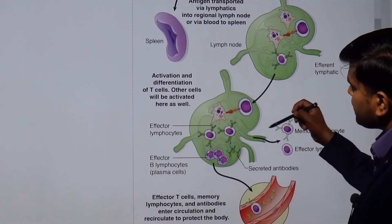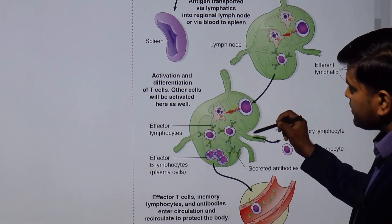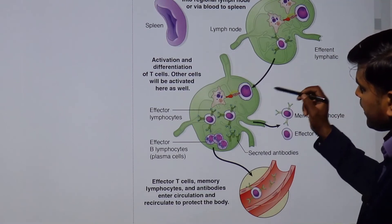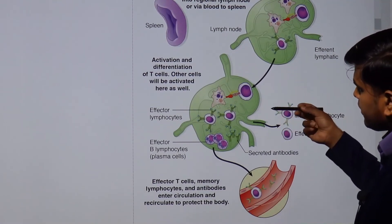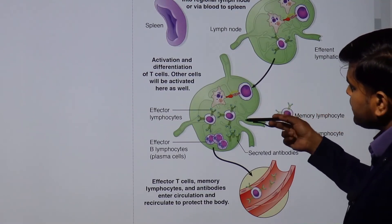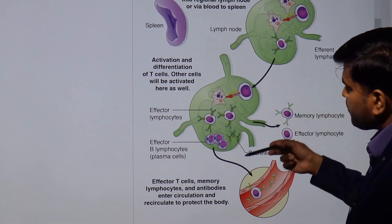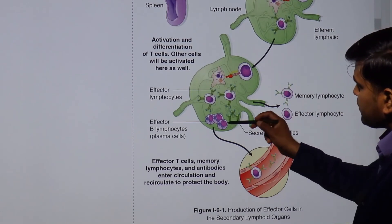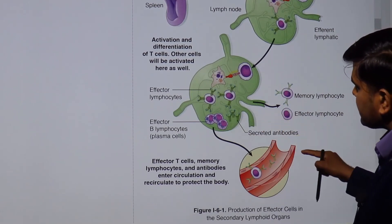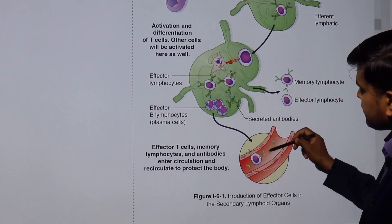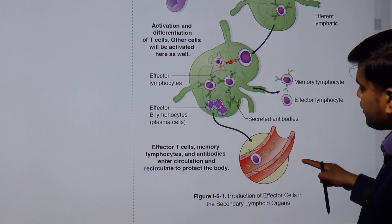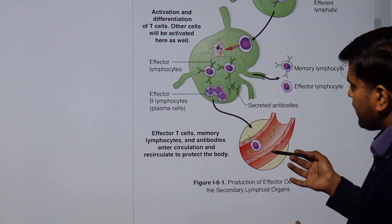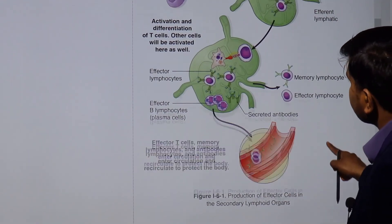Then there will be the formation of the effector T-cell, which will activate the B cell and convert it into a plasma cell. There will be the formation of antibody, which will be secreted into the blood and goes all over the body.